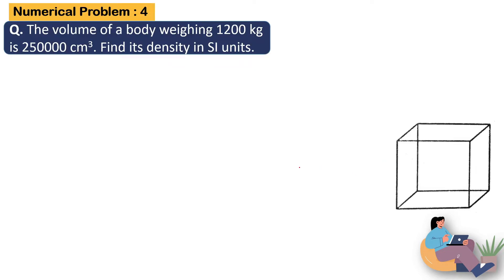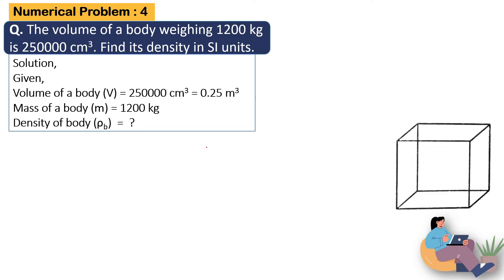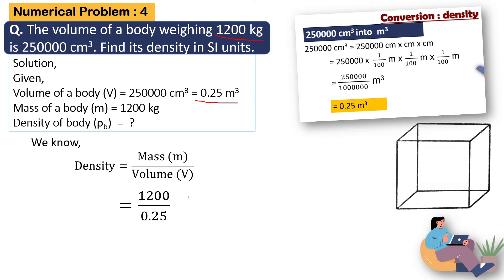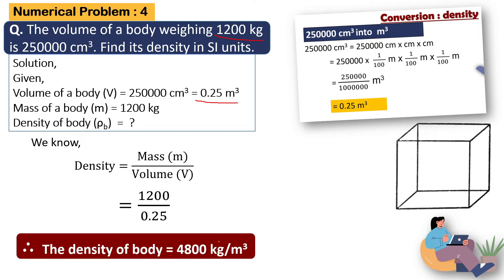Numerical Problem 4: The volume of a body is 2.5 m cube and the mass of the body is 2,100 kg. Find the density of the body. Using density equals mass by volume, with mass equal to 2,100 and volume equal to 2.5, the final answer is that the density of the body is 840 kg per meter cube.